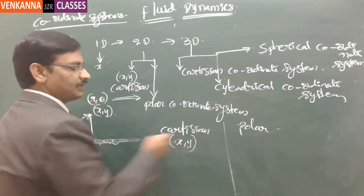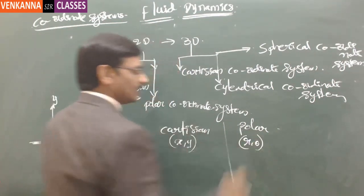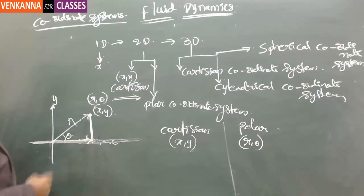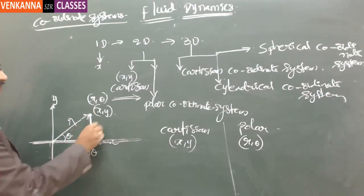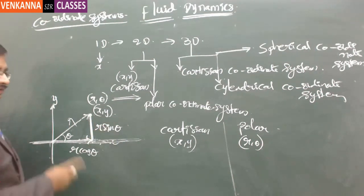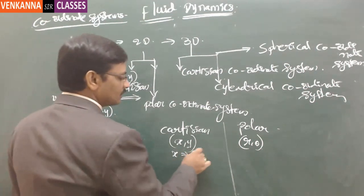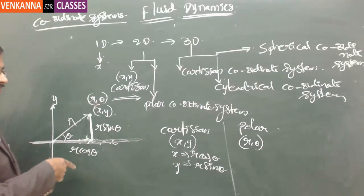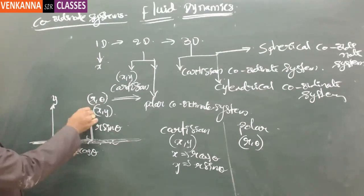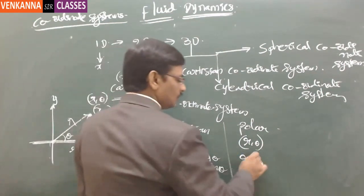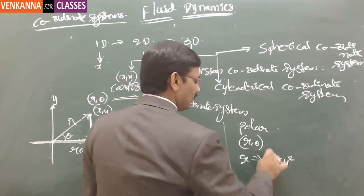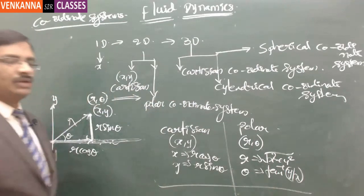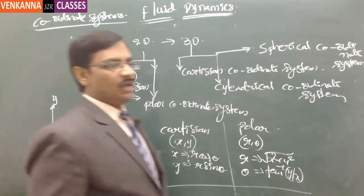Using Cartesian coordinates, the representation is x and y. Using polar coordinates, the representation is r and theta. From the right-angle triangle, x equals r cos theta and y equals r sin theta. Conversely, r equals the square root of x squared plus y squared, and theta equals tan inverse of y by x. This conversion allows you to move from one coordinate system to another.